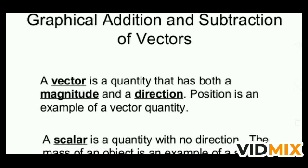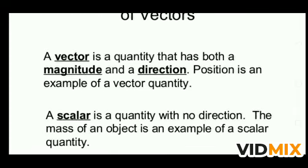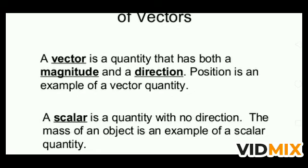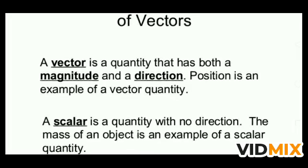A vector is a quantity that has both magnitude and direction. Position is an example of a vector quantity — to describe position you must describe both magnitude and direction. A scalar is a quantity with no direction; mass is an example of a scalar quantity. Only magnitude is required for scalar quantities. So mass is the example of a scalar and position is the example of a vector quantity.